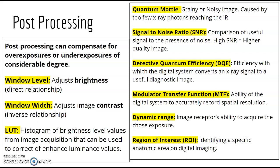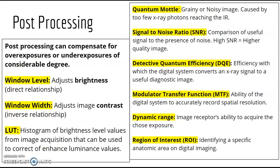DQE is your system's efficiency — how efficiently it takes an x-ray signal and uses it for a diagnostic image. Modulation transfer function is the system's ability to accurately record spatial resolution. Dynamic range is the receptor's ability to acquire a wide range of exposures — you can use a wider range of techniques on a chest x-ray versus a hand x-ray. Region of interest (ROI) is identifying a specific anatomic area on a digital image, such as using the ROI on a portable machine to get a better look at line placement.